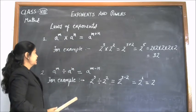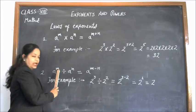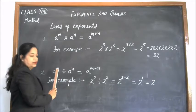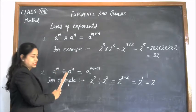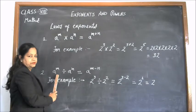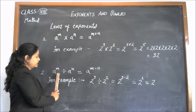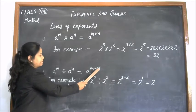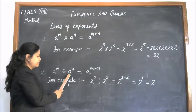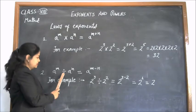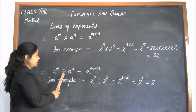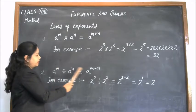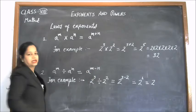The second law of exponents is a to the power m divided by a to the power n. If we have to divide two numbers and we have the same base, we can write this as a to the power m minus n. This means if we have the same base and a division sign, we can subtract the exponents. Our new exponent will become m minus n.